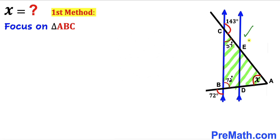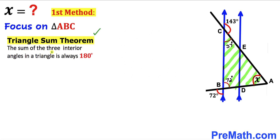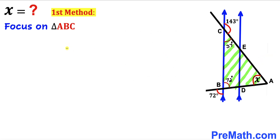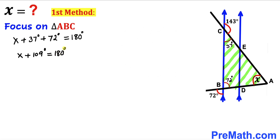Now let's pretend that this blue line DE does not exist and we are going to focus on triangle ABC. Let's recall the triangle sum theorem — the sum of three interior angles in a triangle is always 180 degrees. So angle X plus 37 degrees plus 72 degrees equals 180 degrees. Combining like terms: X plus 109 degrees equals 180 degrees. Subtracting 109 degrees from both sides, our angle X turns out to be 71 degrees.